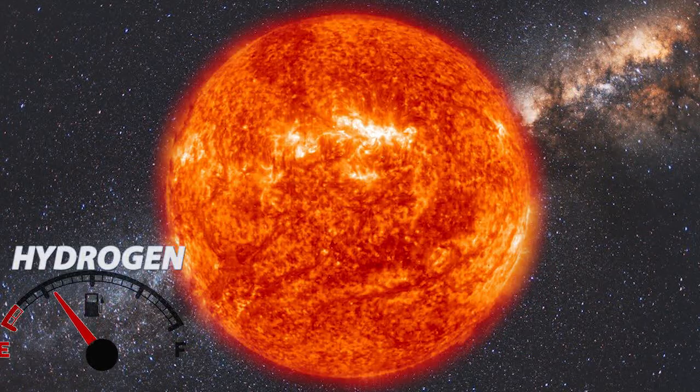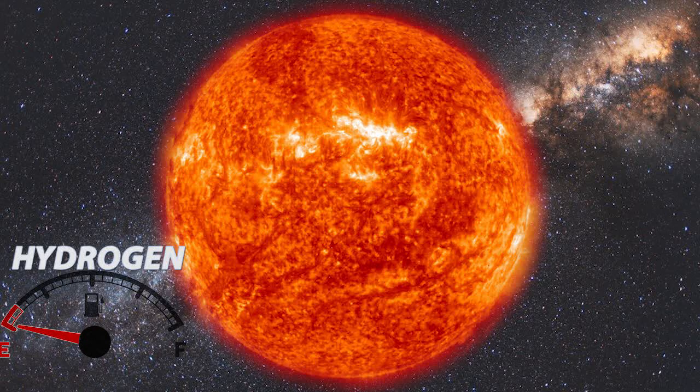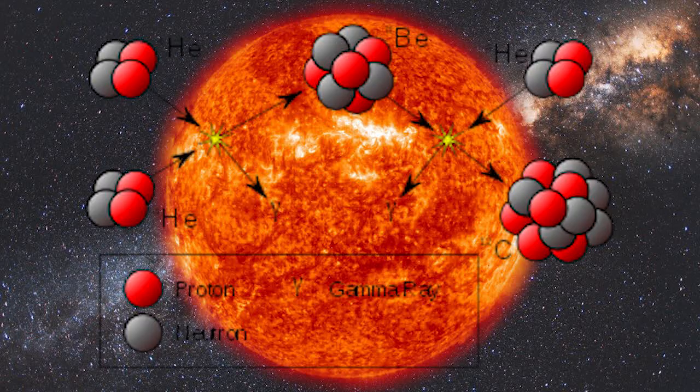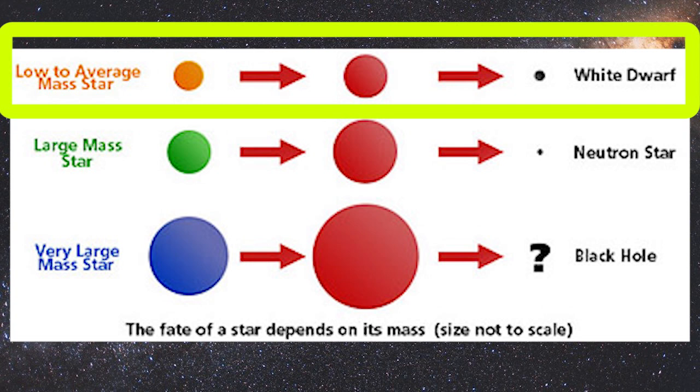But as the star starts to run out of hydrogen, it tries to fuse helium into heavier metals. If the star is less massive than our sun, it would slowly die off as a white dwarf.